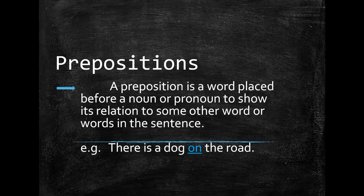And first of all we need to know what is a preposition. A preposition is a word placed before a noun or pronoun to show its relation to some other word or words in the sentence. For example, there is a dog on the road. The word 'on' is a preposition because it is showing the relation between the road and the dog. So this is the use of prepositions.